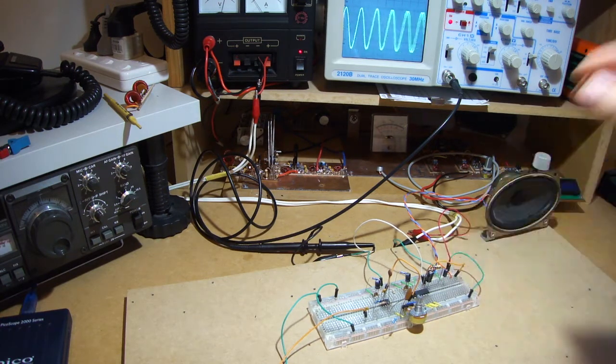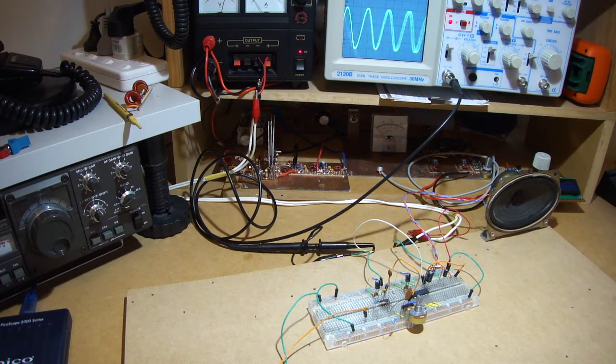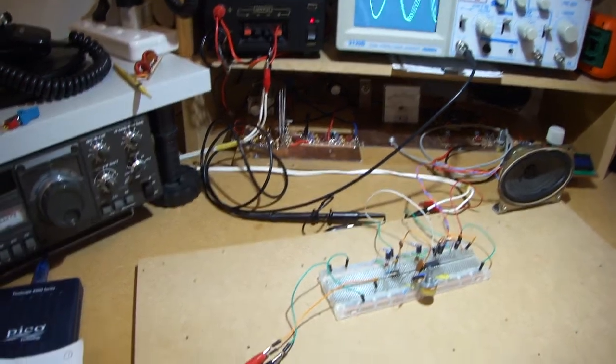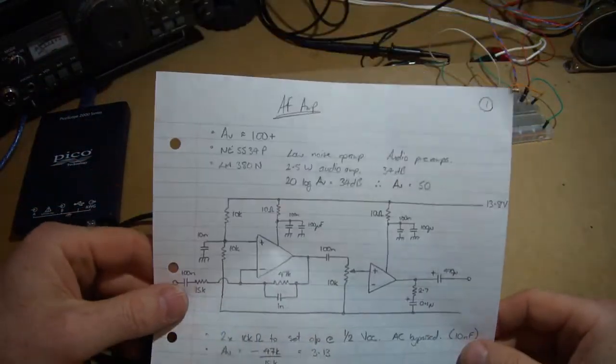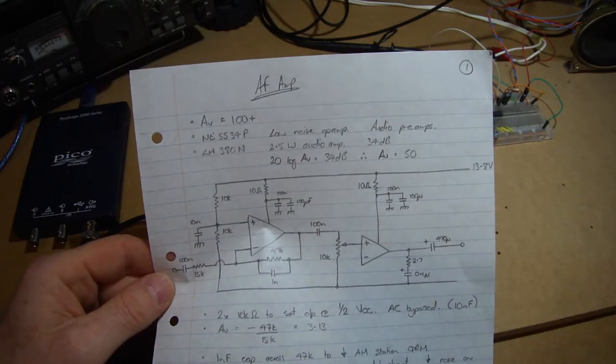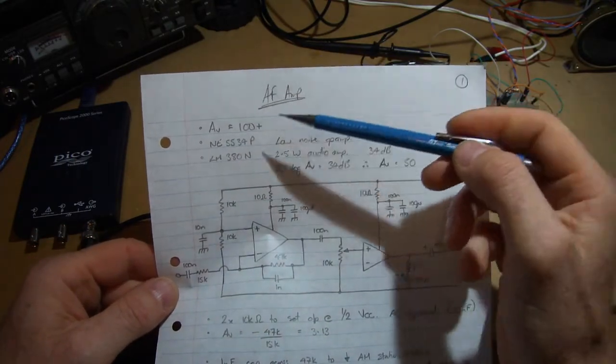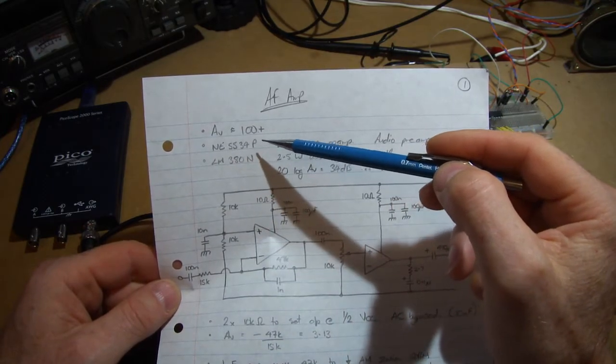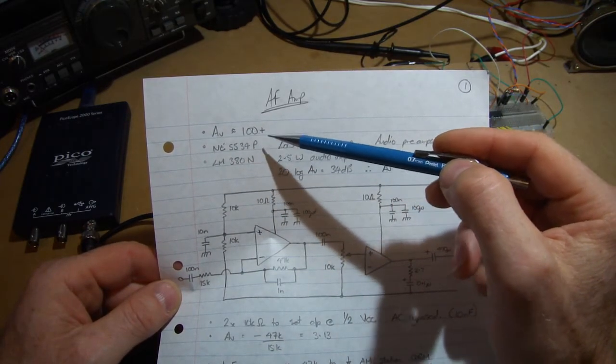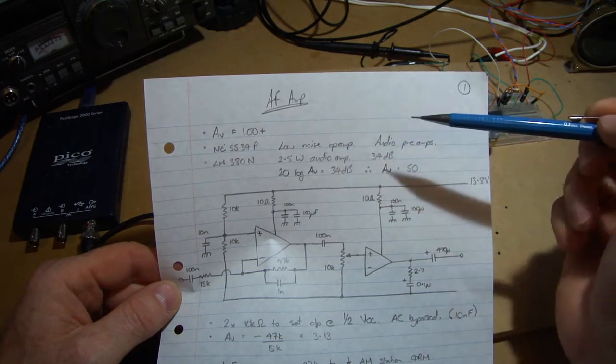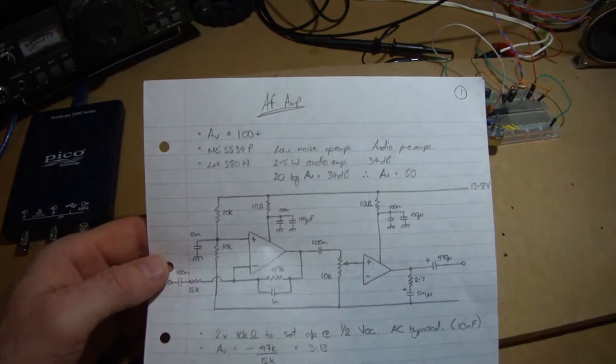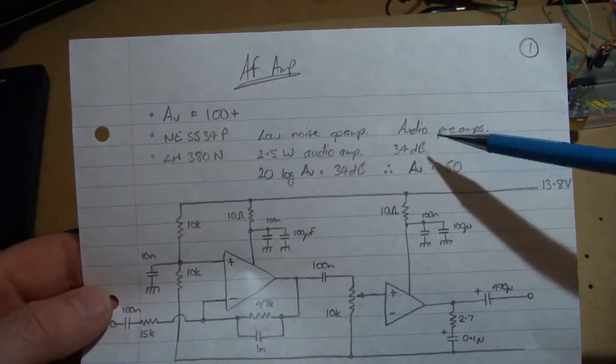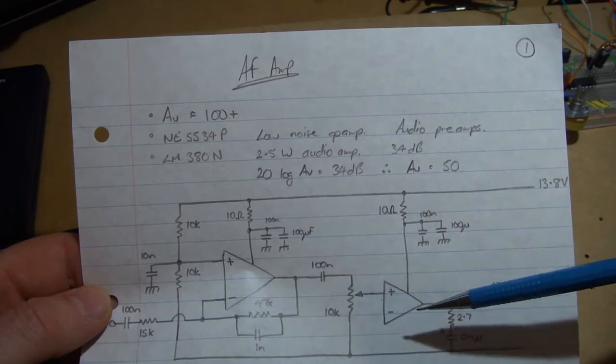Okay everyone, just want to do a video today on the audio amp. What I've decided to do for this particular build is use two amps, two op amps. I want to use an NE5534P, so that's the low noise version op amp. If you look at the spec sheet, one of the use cases for that particular op amp is an audio preamp.